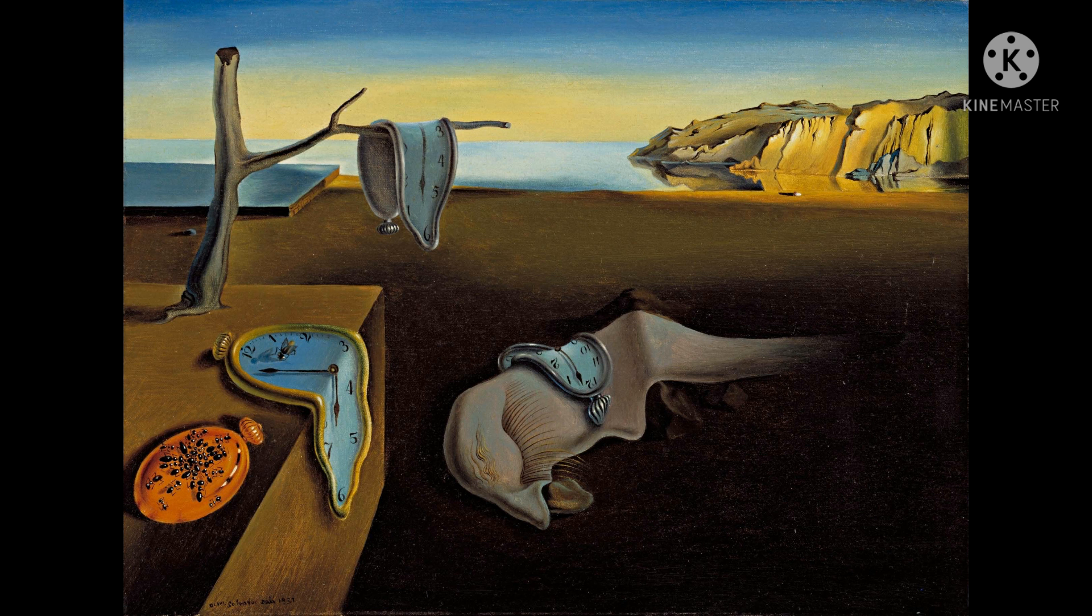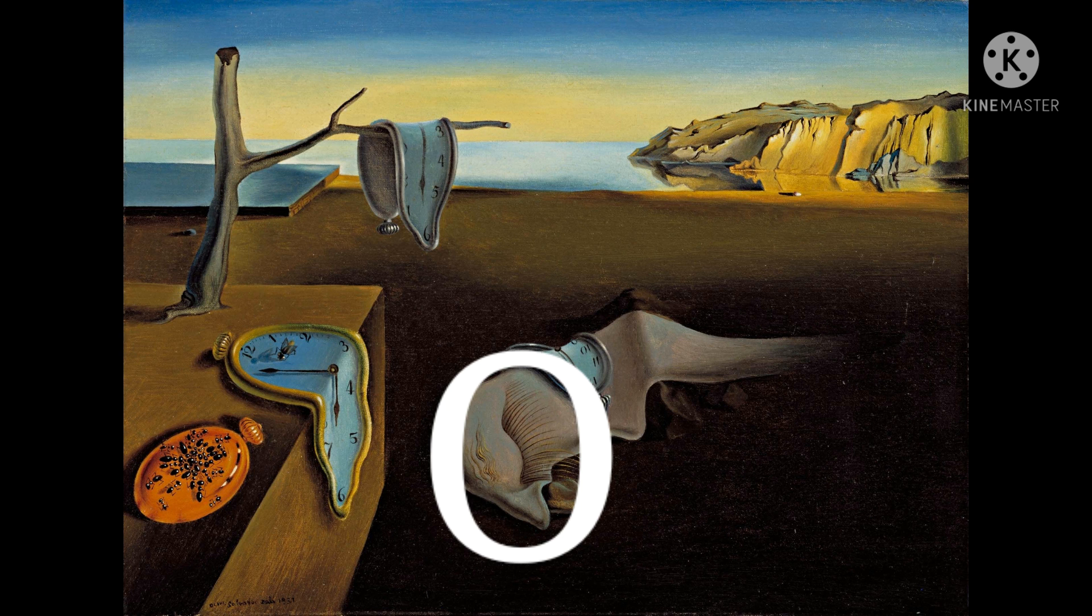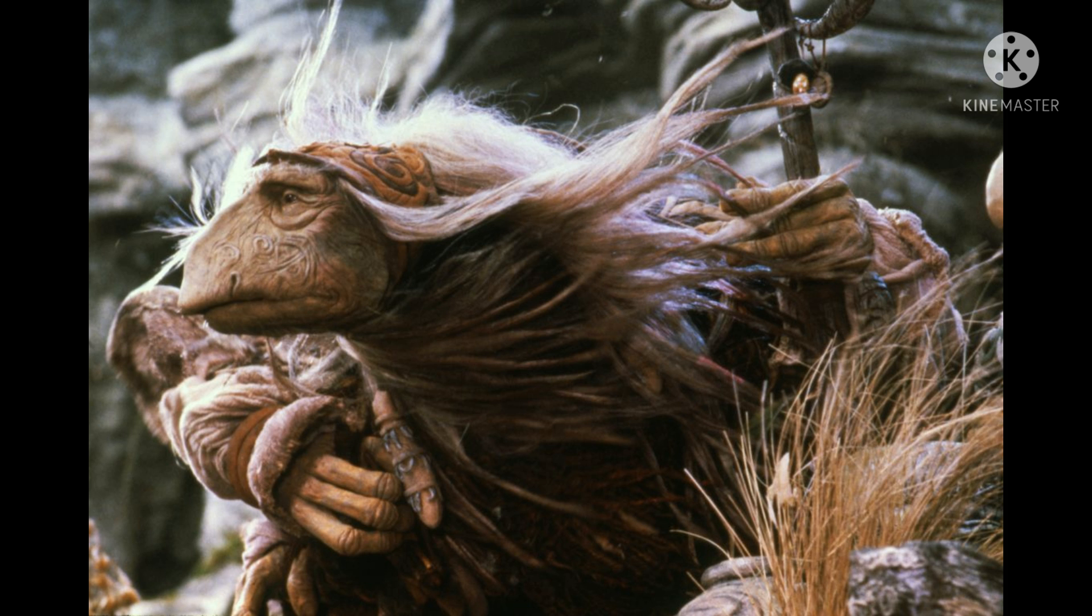Okay, so here we have a surreal painting by the man we're going to talk about today. As you see here, it's realistic but it's bizarre. It has melting clocks, floors, and this. I've always thought that the thing looked like the other thing from the Dark Crystal.